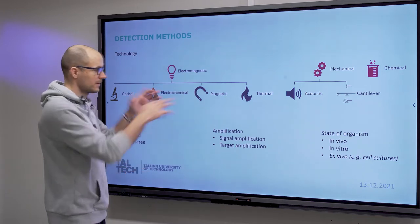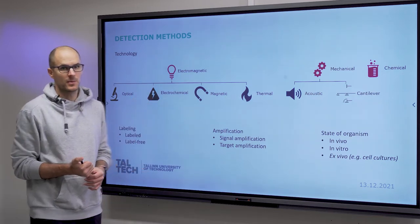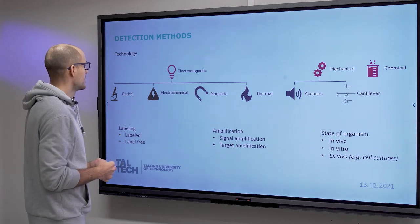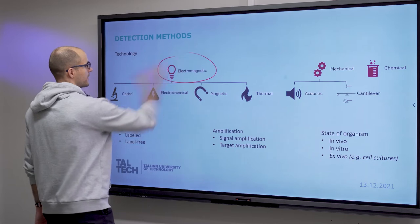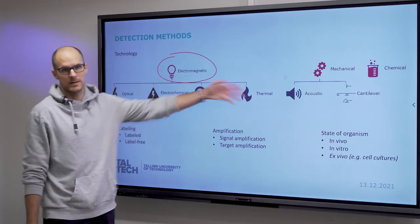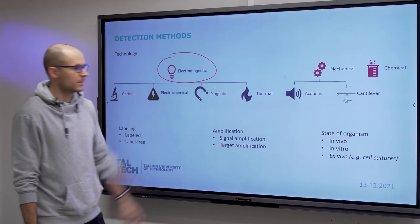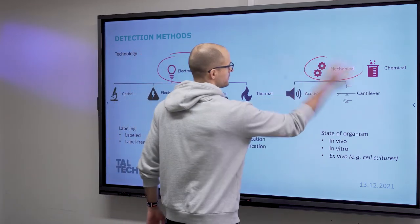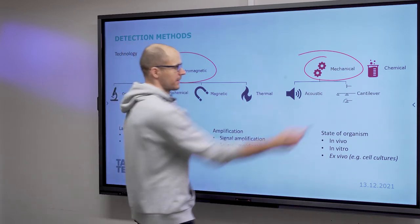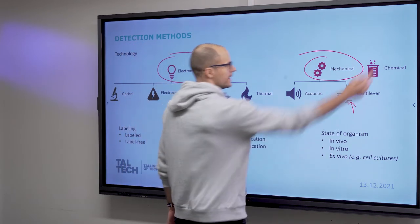Our categorization for the sensors that we talk about today, and the ones that are commonly used in lab on a chip: Electromagnetic is the largest group, and under that we have optical, electrochemical, magnetic, and thermal. We will talk about all of these. Mechanical, acoustic, and cantilever type sensors for sensing mass. And chemical, which we will not talk about.